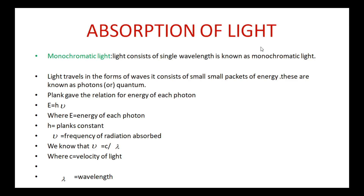Next topic is absorption of light. For absorption of light, we need to know about monochromatic light. Monochromatic light means light consisting of a single wavelength. Light travels in the form of waves and consists of small packets of energy. These small packets of energy are called photons or quanta. Planck gave the relation for the energy of each photon.